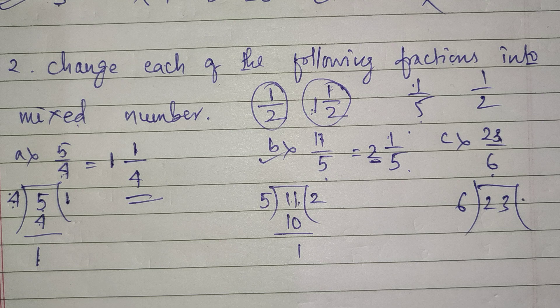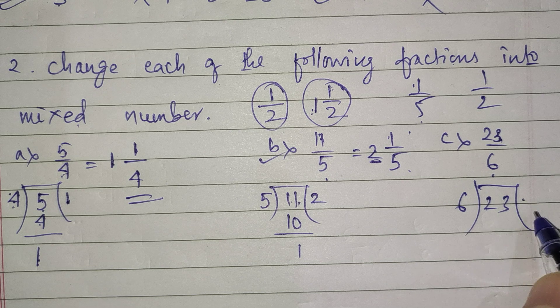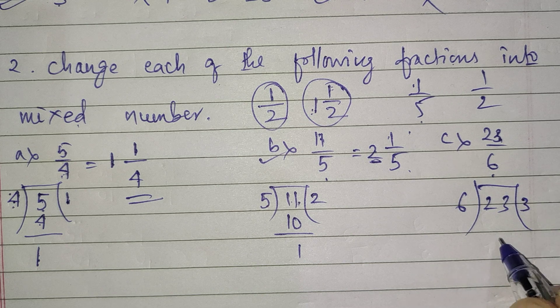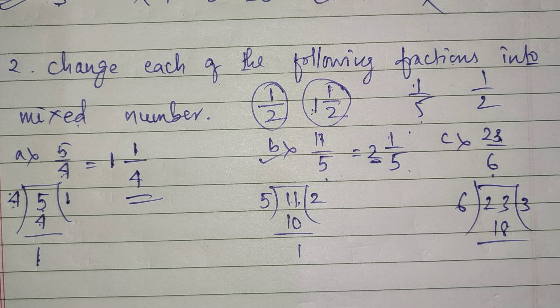6 threes are 18, and 6 fours are 24, so 24 is too large. We use 18. 23 minus 18 is 5.